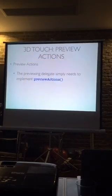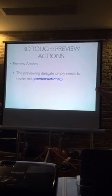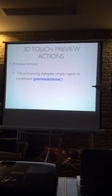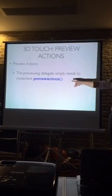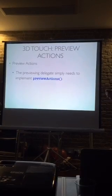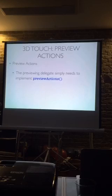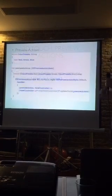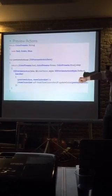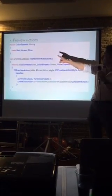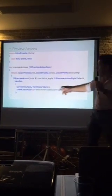So the next step is these previewing actions — this is the swipe up where you might get, for example, respond to an email or delete email. All we need to do is have our preview delegate implement this method: previewActions. And there's nothing else we need to do to get this UI built apart from that. So to get a little array of actions in my ChromaTouch application, when the user swipes up, they get those preview actions represented with red, green, and blue presets.